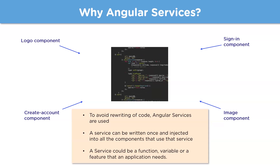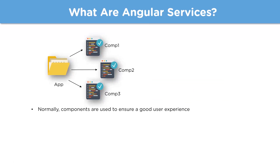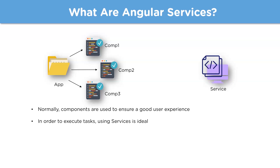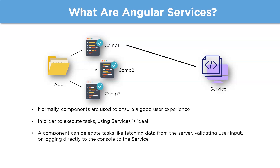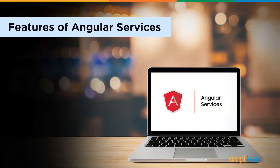A service could be a function, a variable, or a feature that an application needs. The main use of a service is to write code once and avoid rewriting it. The same code can be injected into several components. Normally, components are used to ensure a good user experience — they make sure whatever is rendered on the screen is right and pristine. But to execute tasks, we make use of services. A component can delegate tasks like fetching data from a server, validating user input, or logging to the console to a particular service.